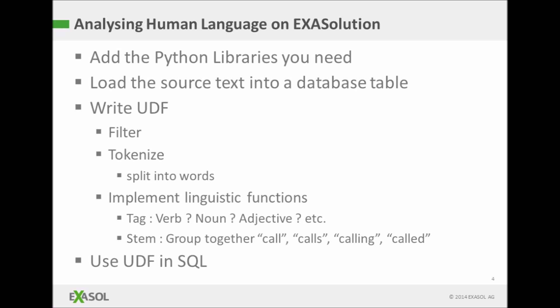To add the features necessary to analyze natural language, we have to add some Python libraries to ExaSolution. We then load the source text into a database table and write some UDFs using these Python libraries. The process would be to filter the data to take out anything you don't want to analyze, then to tokenize it, which is to split it into words, and then to implement some linguistic functions.